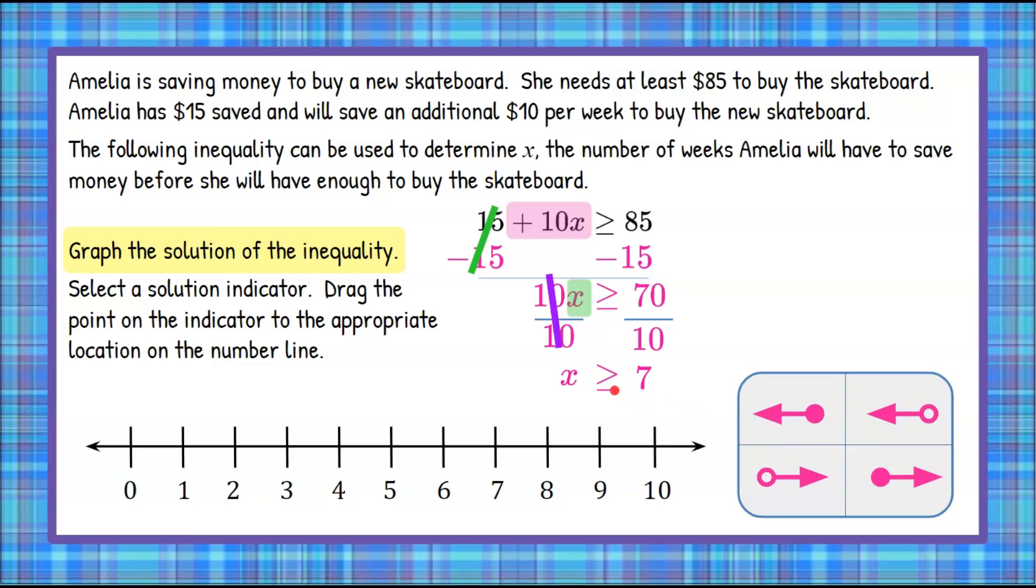And here's a tip: it's greater than, so that means we're pointing to the right. So this is the arrow indicator we're going to use to graph our inequality. Closed circle because it can be equal to, and pointing to the right because it can be greater than.